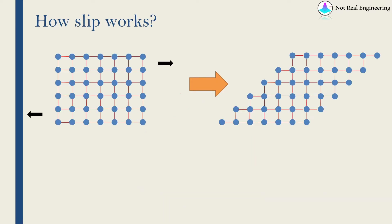Now let's see how exactly slip works. This is just a basic 2D representation — actually a crystal is always in 3D. So this over here is our initial configuration. These blue circles are atoms and these red lines are bonds between atoms. As it is a crystal, atoms are arranged in a highly orderly structure. And when we apply a shear load on this, these atoms get rearranged. This is equivalent to these atoms slipping over each other — that's why it is called slip.